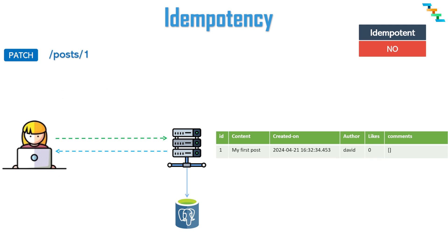Next is the PATCH method, which is used to apply partial modifications to a resource. PATCH requests are not inherently idempotent — the idempotency depends on how the server handles them. For example, if a PATCH request only contains a comment and a post ID as the path parameter, the server adds this comment to the post. When this request is retried, the server treats it as a new request and adds the comment again as another new comment. So the post ends up with two identical comments, meaning each retry changes the server state — this PATCH request is not idempotent.